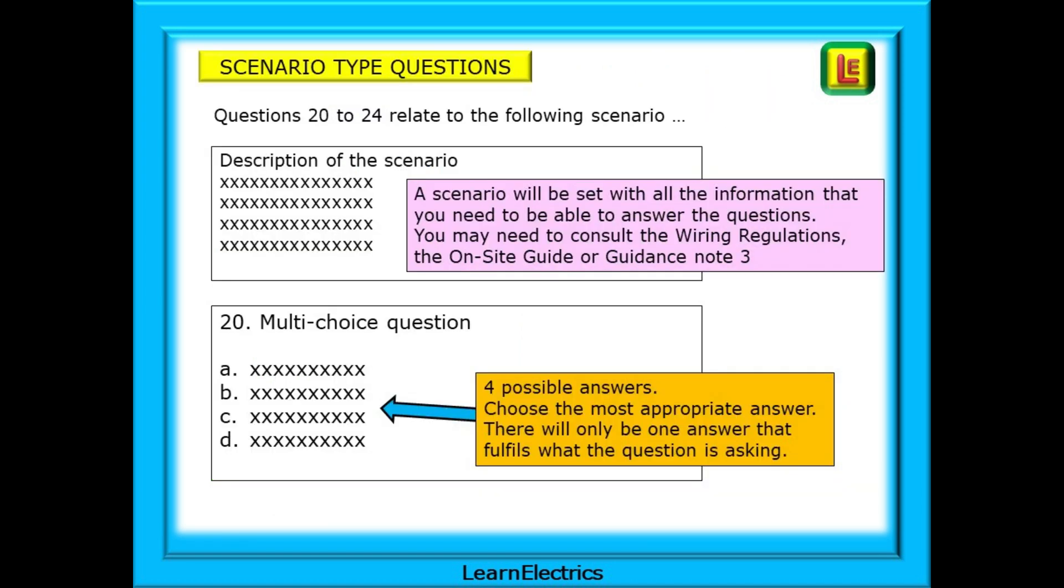Scenario type questions will often come up in 2391 style exams. A scenario will be described to you with all the information that you need to be able to answer the questions that follow. You may need to consult the wiring regulations, the on-site guide or guidance note 3, so make sure that you have the latest editions of these books and most importantly you know how to use them.